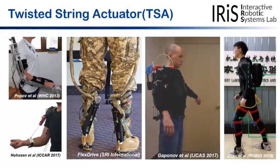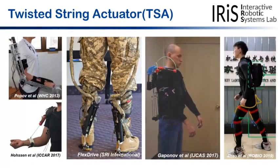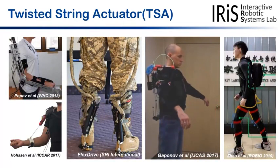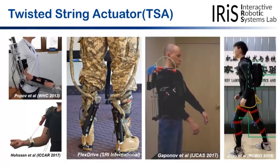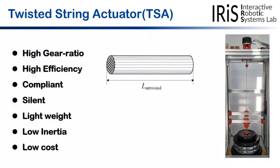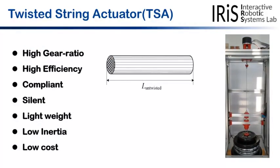In order to avoid those disadvantages, many researchers adopt the twisted string actuator or TSA due to the high power-to-weight ratio and compliance. Different types of exoskeleton and assistive devices have been proposed using TSA.